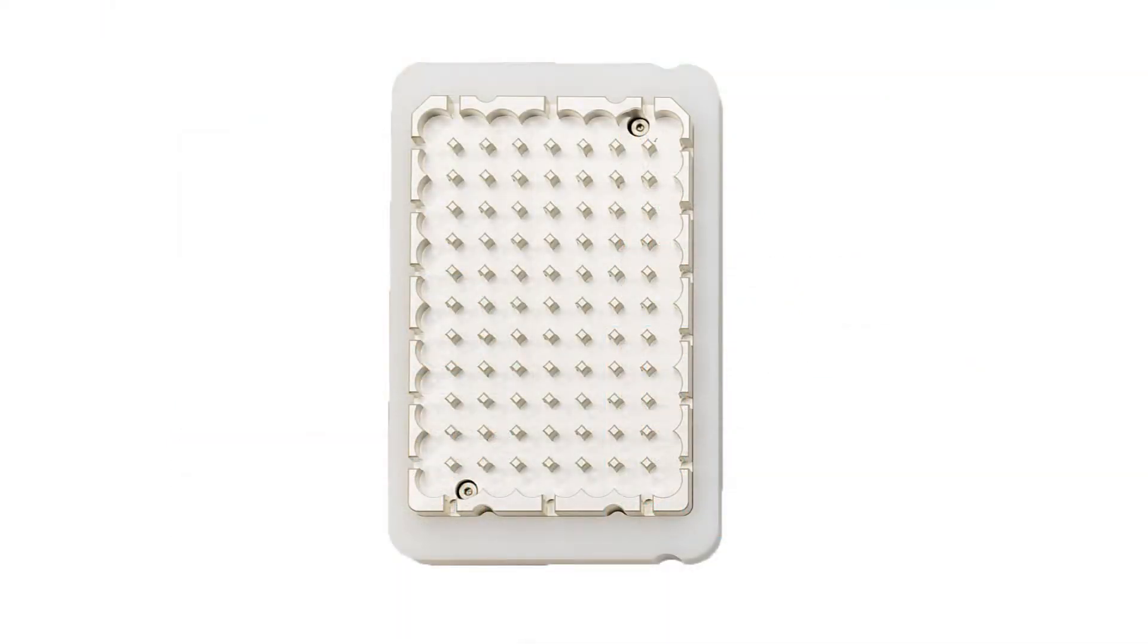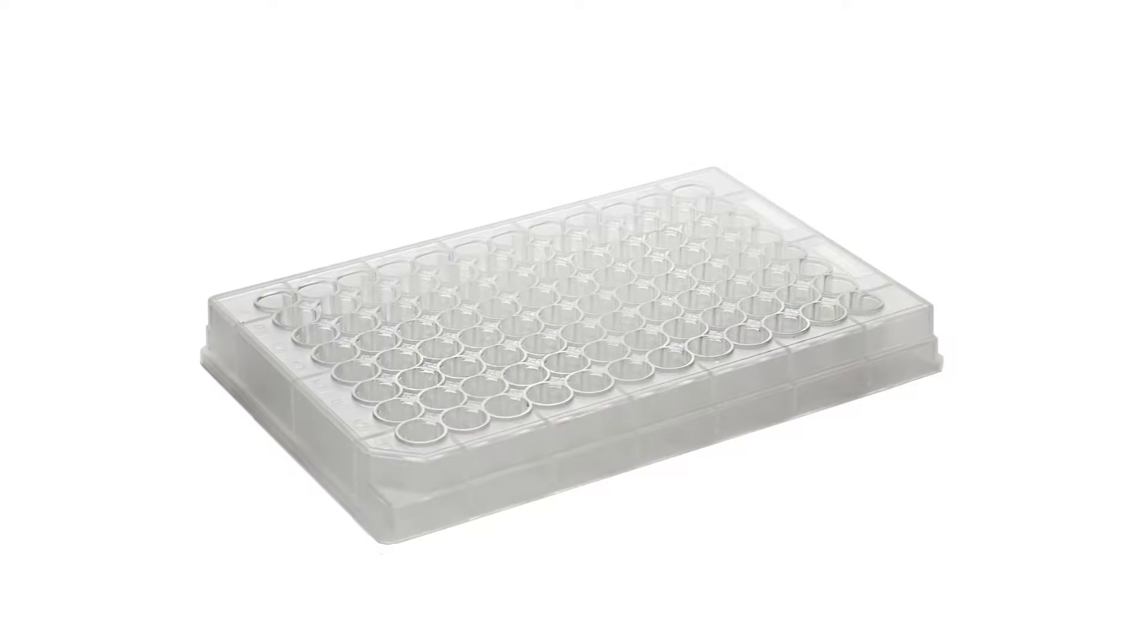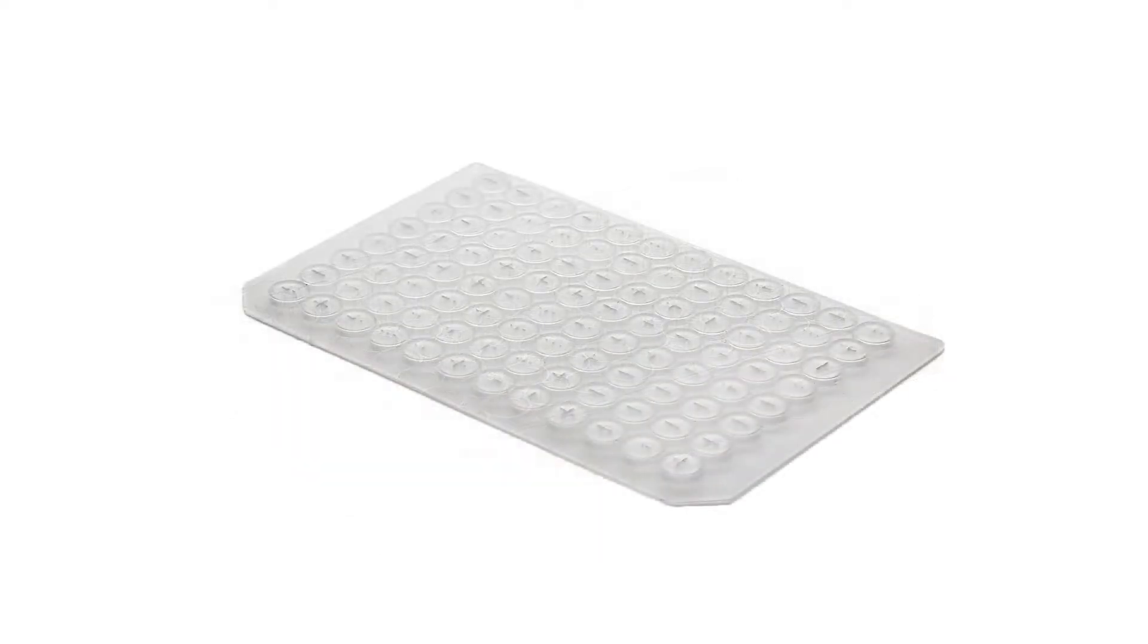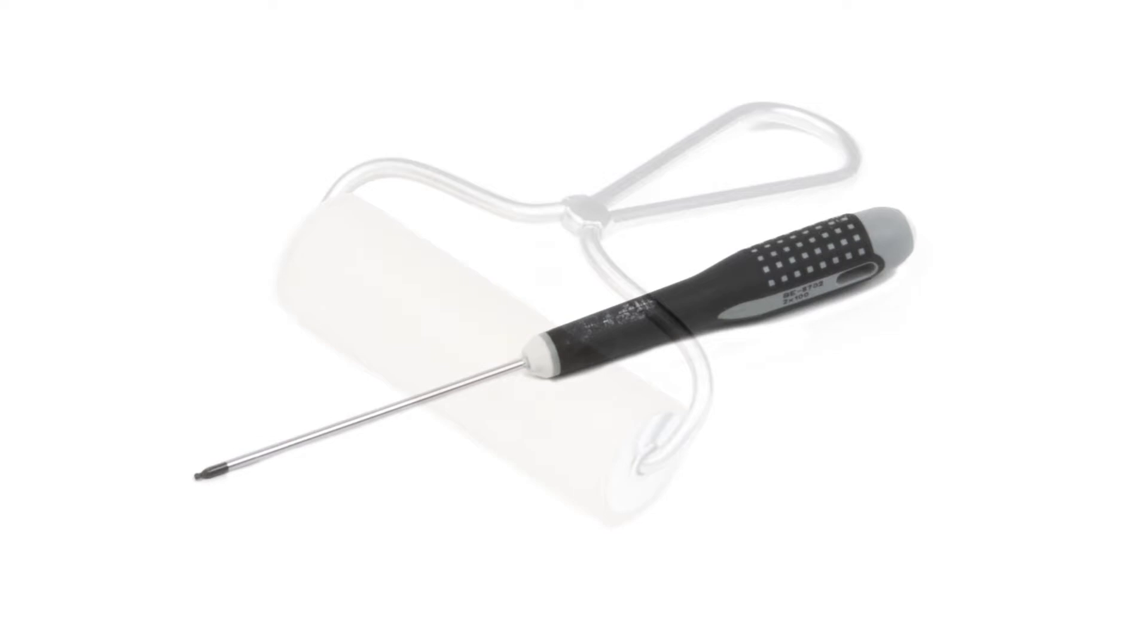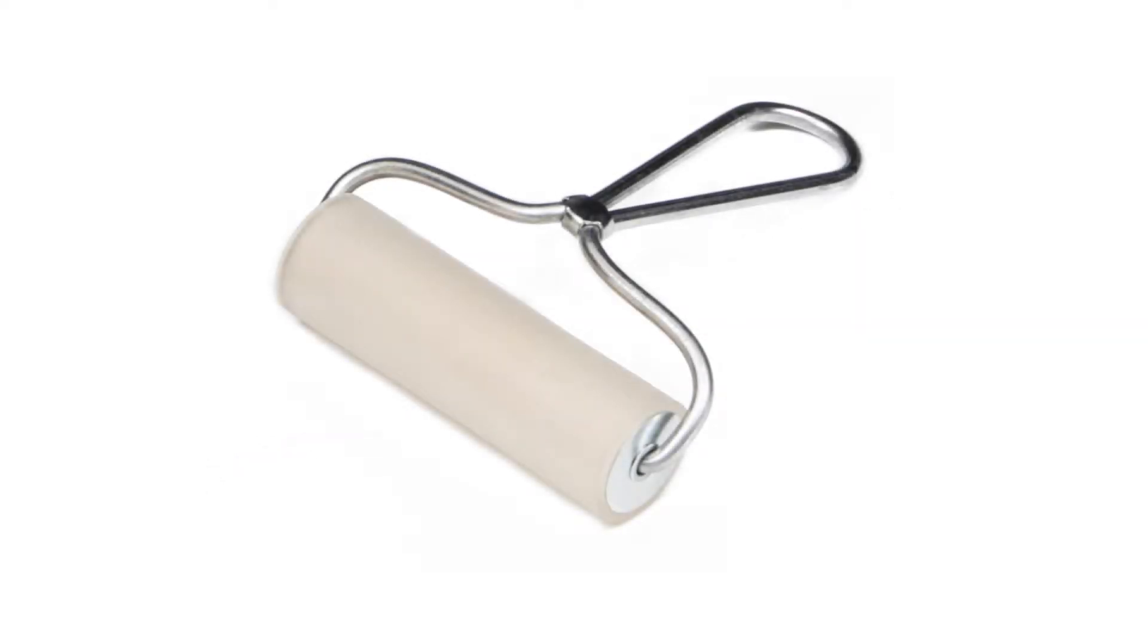A 96 Well Plate Adapter. One pack of 96 Well Low Volume Microplates. One pack of cap mats. One 2mm Allen Wrench. One plate roller for creating an airtight seal between the well plate and the cap mat.